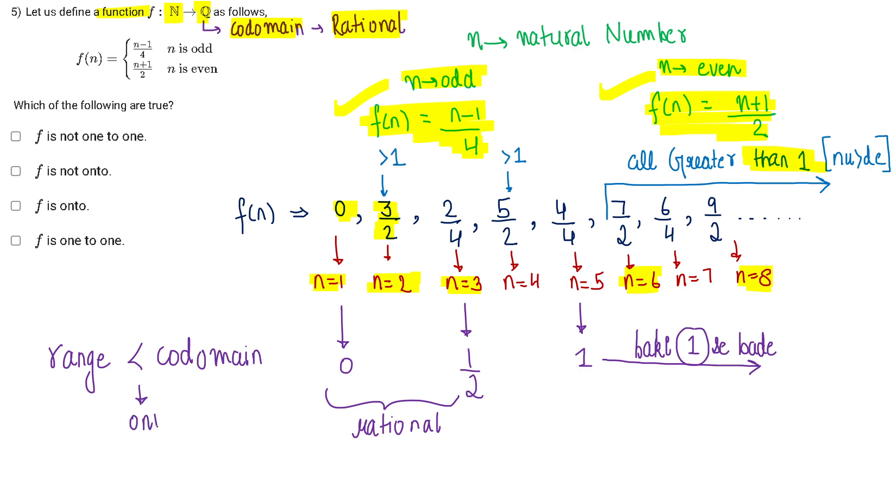Or I can say it is not surjective. This is not a surjective function. Why? Because my range and codomain are not equal. So this is not surjective.